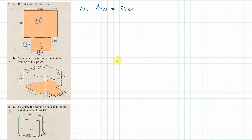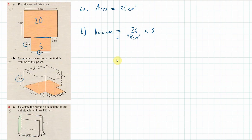For part 2b, we find the volume of the prism. All the way along, the height is 3 centimeters. So the volume equals the 26 centimeters squared area multiplied by 3, which gives 78 centimeters cubed.